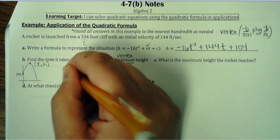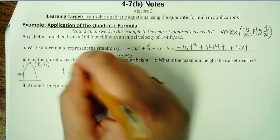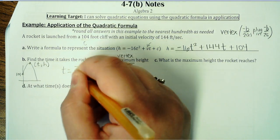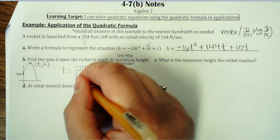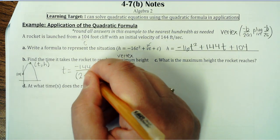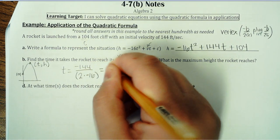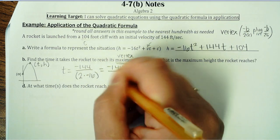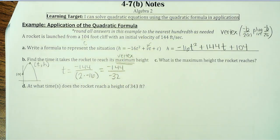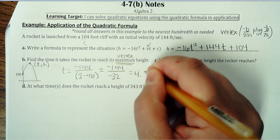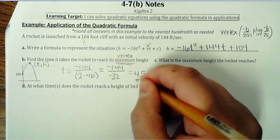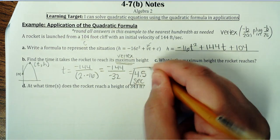So our time here: opposite of b would be negative 144 over — remember, you have to either figure this out or put this in parentheses if you want to type it in the calculator — 2 times negative 16. So it should be negative 144 over negative 32. The negatives cancel out, and that's 4.5. So this is the time, and that's going to be in seconds.